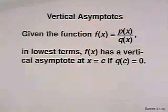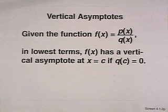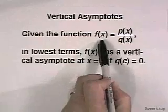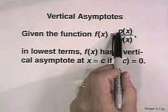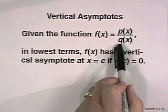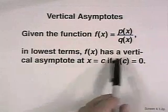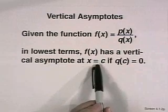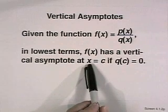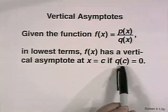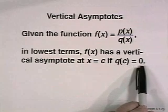When that occurs, we have an example of our first important characteristic: the vertical asymptote. An asymptote is a line which a graph approaches but never crosses. If we're given a function f of x, which is p of x over q of x as defined for rational function, and it is in lowest terms, we say that f of x has a vertical asymptote at the vertical line x equals c